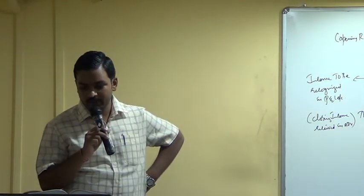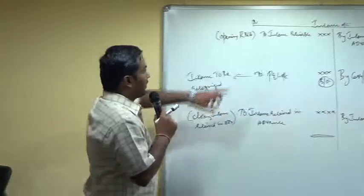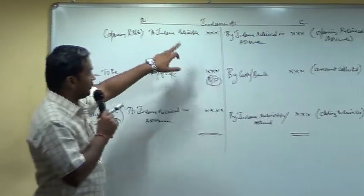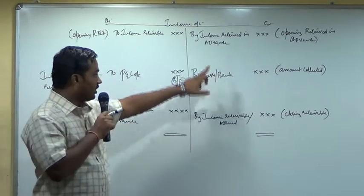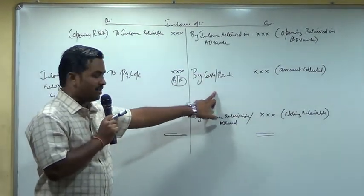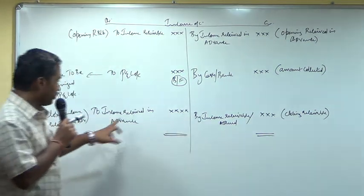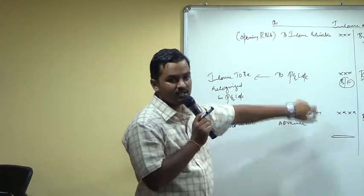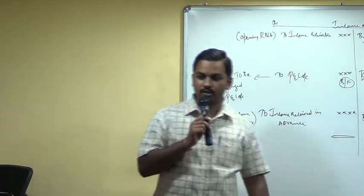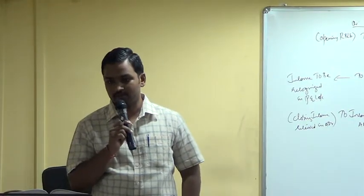If you have not prepared the format, please prepare it now immediately. Opening receivable is debited; opening received in advance is credited; amount collected is credited; closing receivable is credited; closing received in advance is debited. And the balance is income to be recognized in the profit and loss account, which is credited to the profit and loss account and debited to the income account.